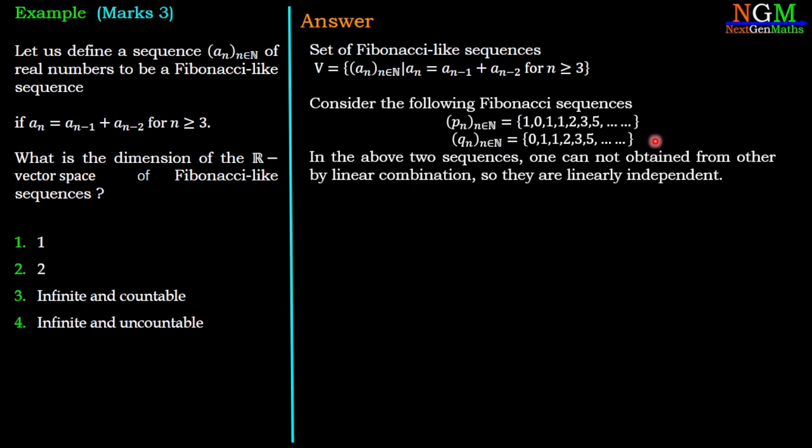These two sequences are independent with respect to the defined operations, because one cannot be obtained by the linear combination of the other. That means one cannot be obtained by scalar multiplication of the other. Therefore Pₙ and Qₙ are linearly independent with respect to the defined operations.